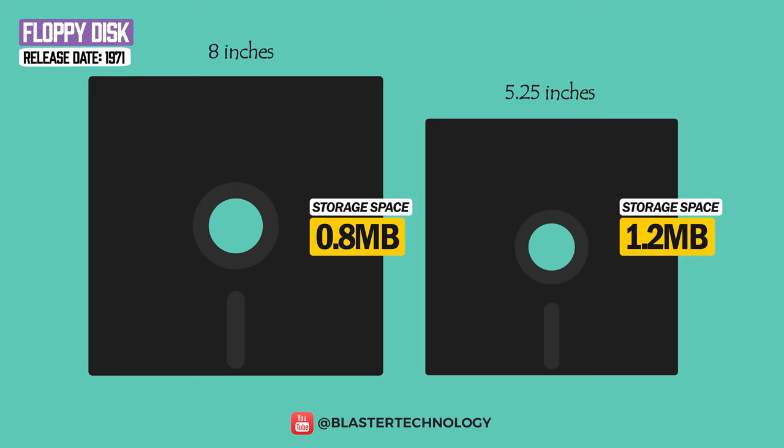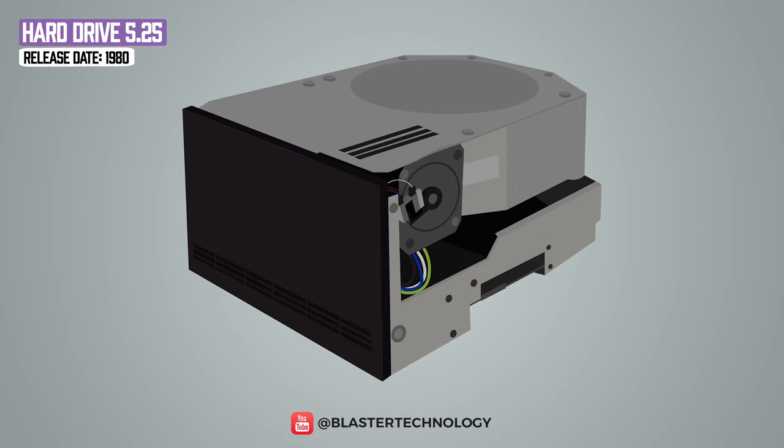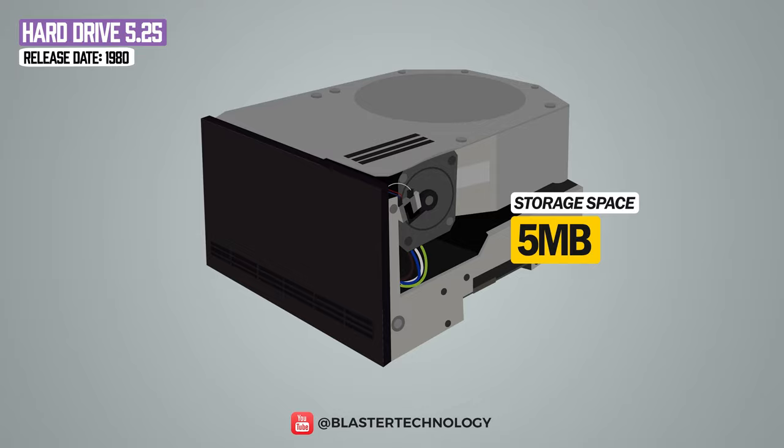The 3.5-inch floppy disk was introduced in 1982, was the most popular, and could store 1.44 megabytes. Also in that period, in 1980, Seagate released the first 5.25-inch hard drive with the same structure as today. It weighed 2.3 kilograms and could store 5 megabytes of data.